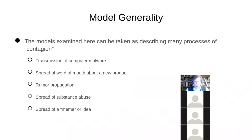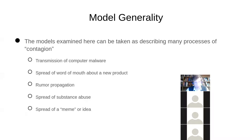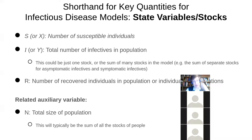We went through these terms before, but we're going to go through the intuition for them because there's a lot of rich intuition there. These models, at the most obvious level, describe the spread of contagion, whether in a class or across a university or across a city or across a continent or the world. But they can describe lots of other things — the spread of computer viruses, word of mouth, rumor propagation, substance abuse, spread of memes, diffusion of innovation, etc.